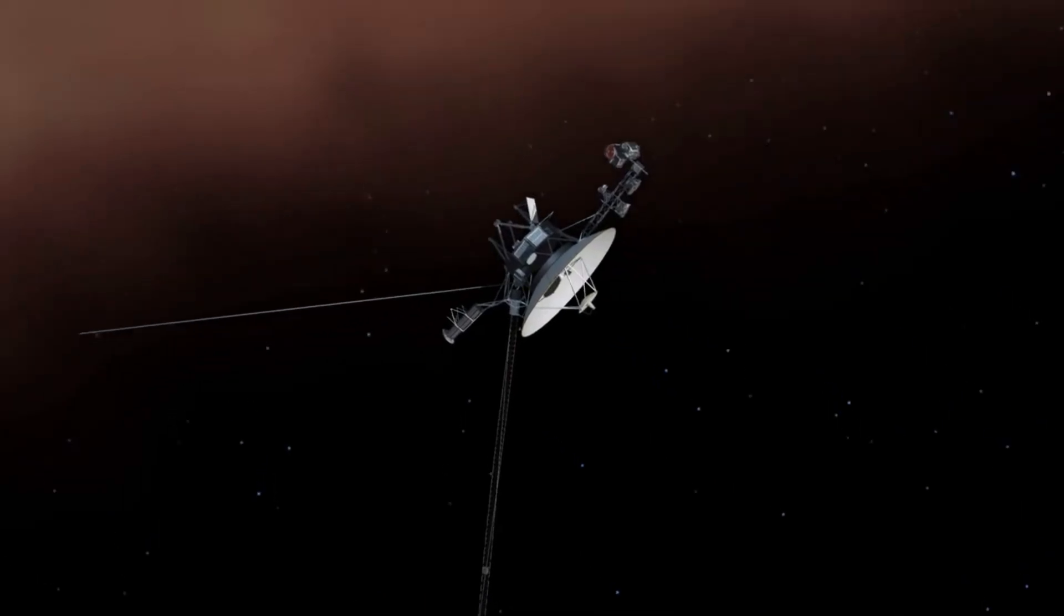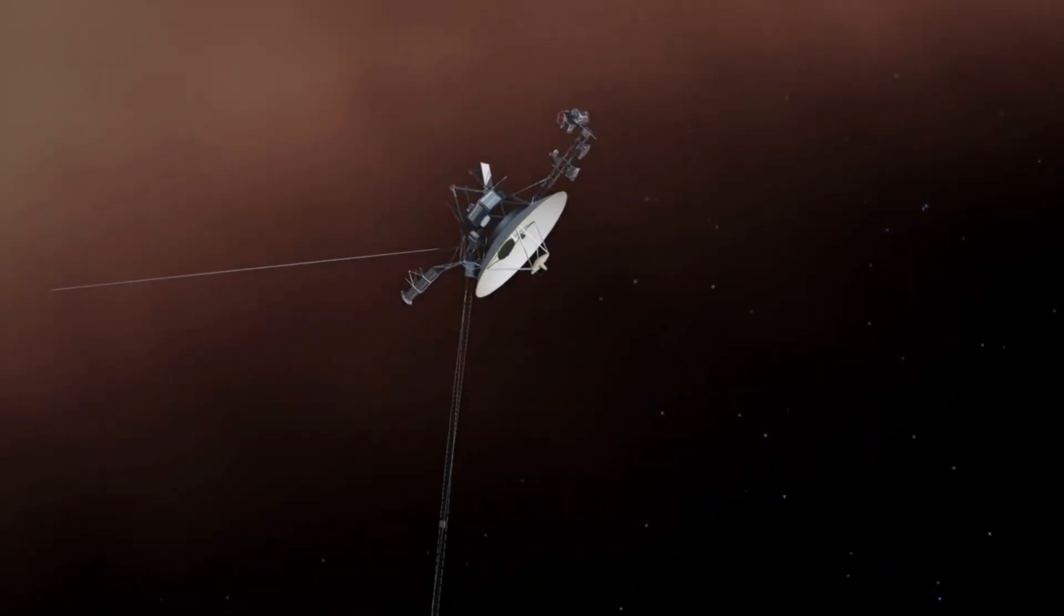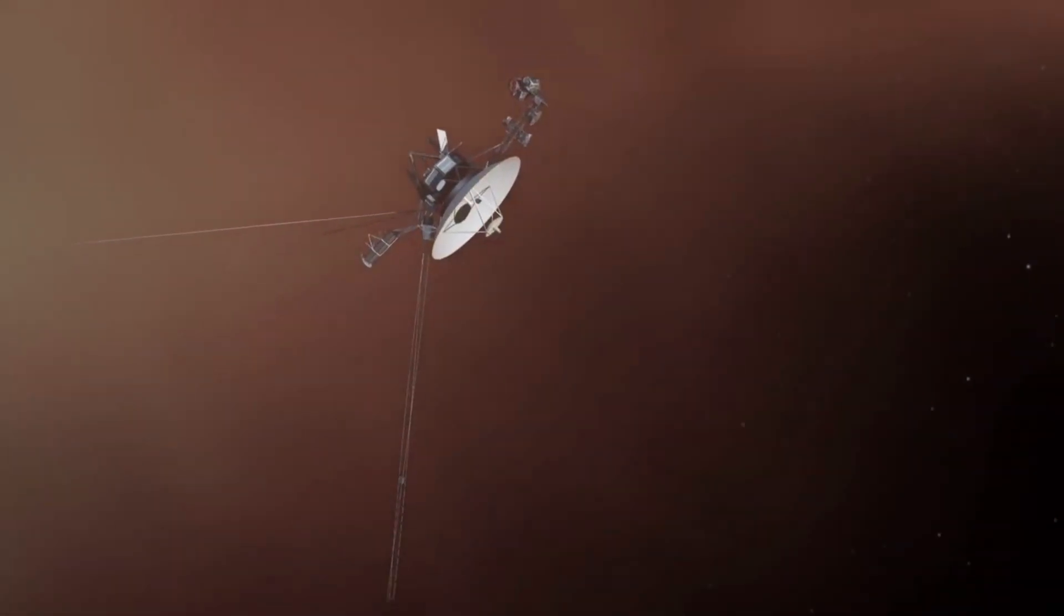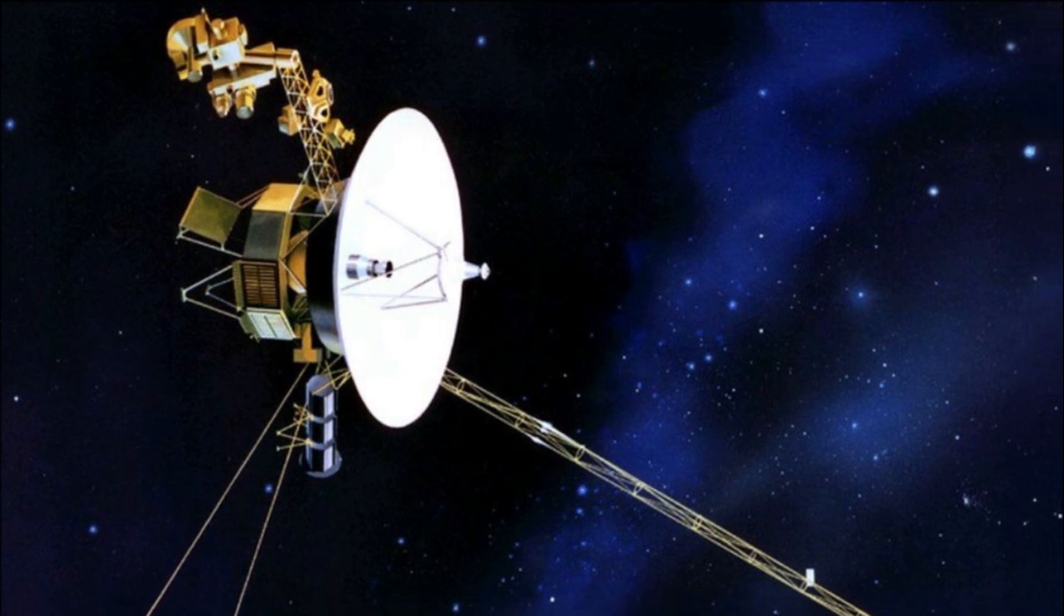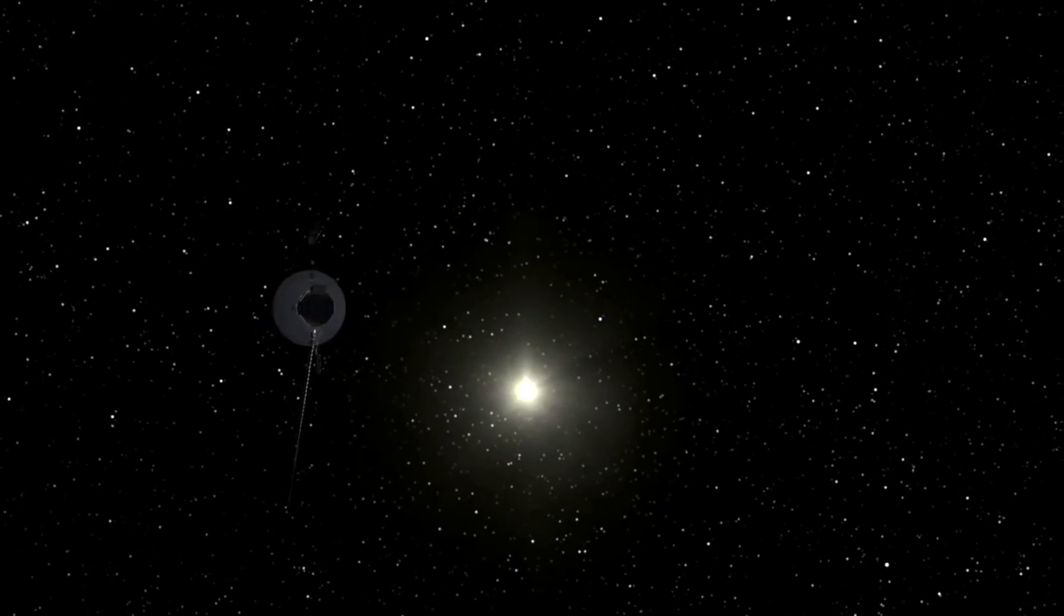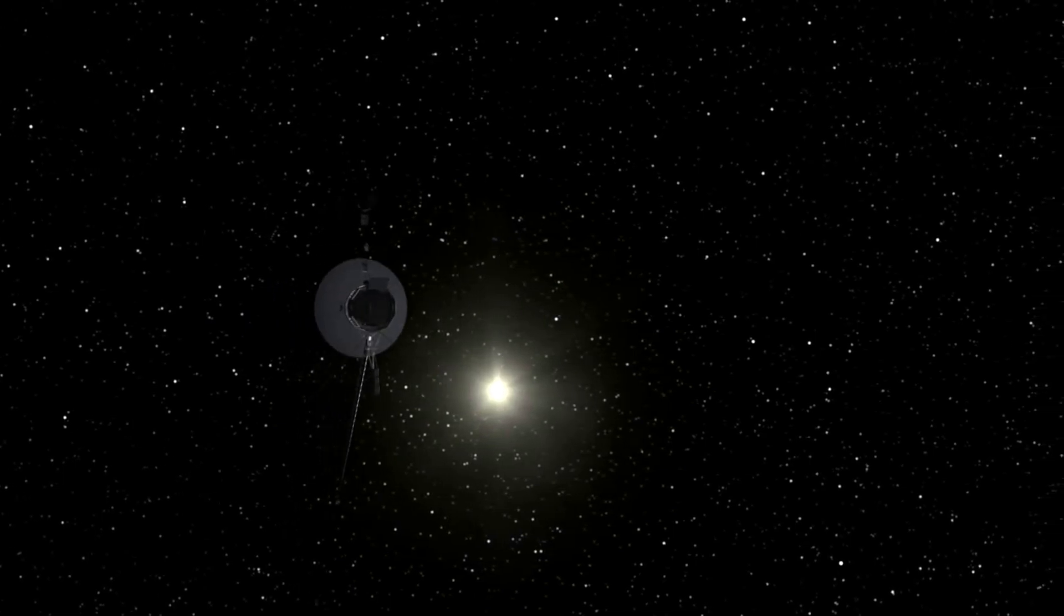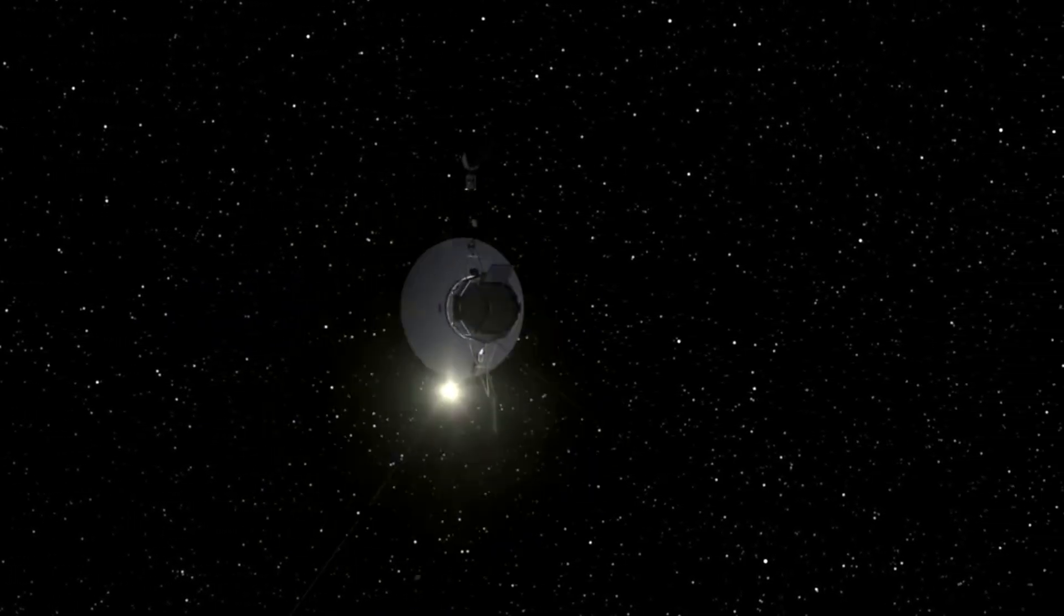NASA said in a statement that a series of planned commands sent to NASA's Voyager 2 spacecraft on July 21st inadvertently caused the antenna to point two degrees away from Earth. As a result, Voyager 2 is currently unable to receive commands or transmit data back to Earth. This obviously was not good news and had some within the agency worried about the state and future of the spacecraft.